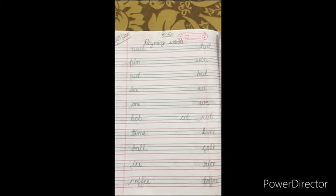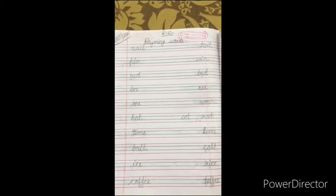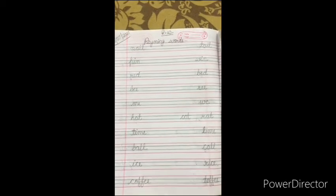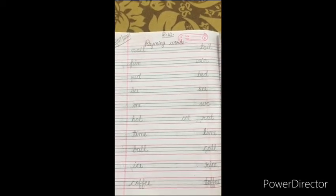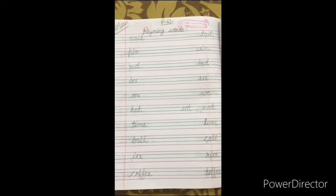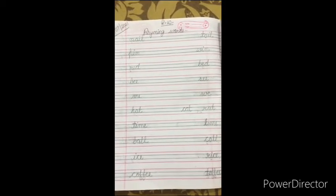You know what are rhyming words? No? Don't worry, I'll tell you. Rhyming words are those words that have same ending sounds. Rhyming words are those words that have same ending sounds. Clear?